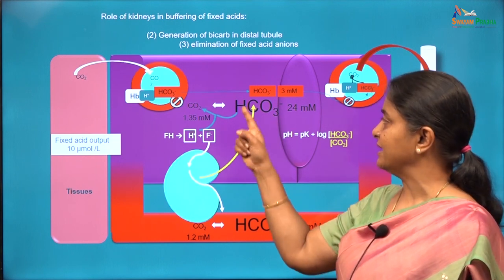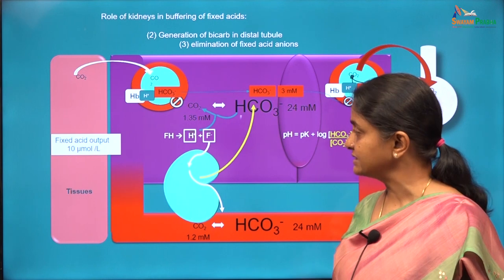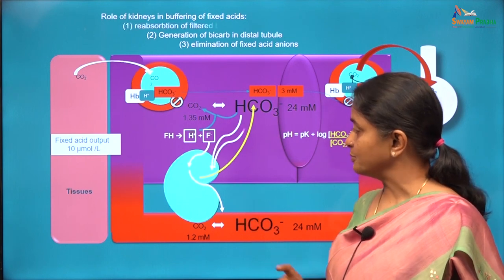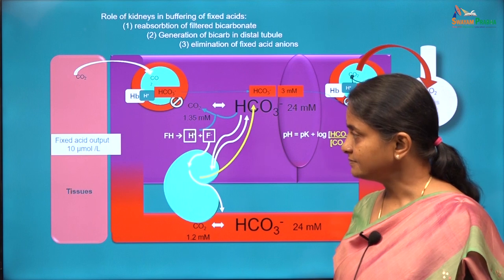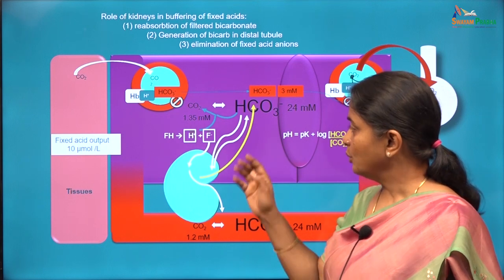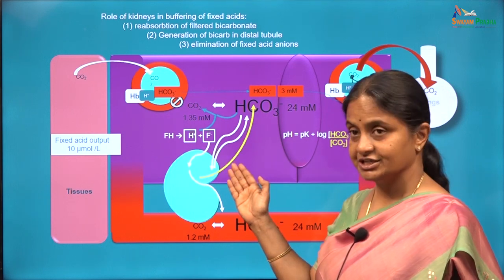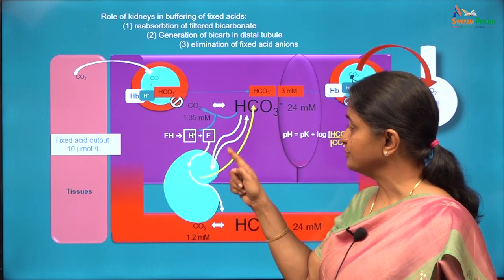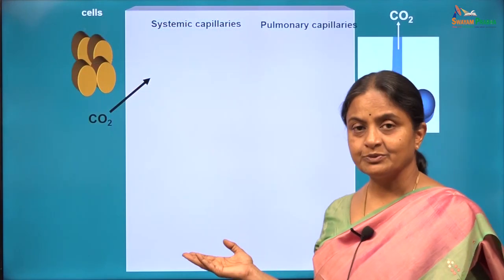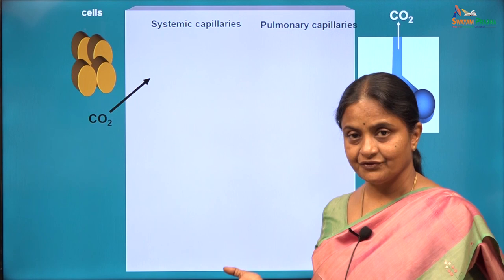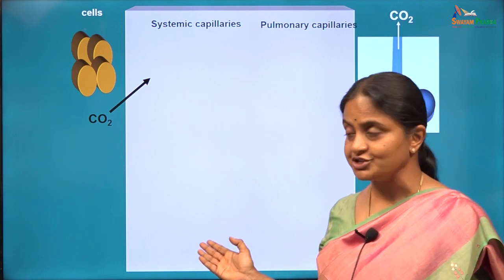The third role of the kidney in maintaining plasma bicarbonate levels is reabsorption of filtered bicarbonate. We will consider these three mechanisms in this session starting with reabsorption of filtered bicarbonate. The graphics will be different for this session and therefore bear with me for repetition.